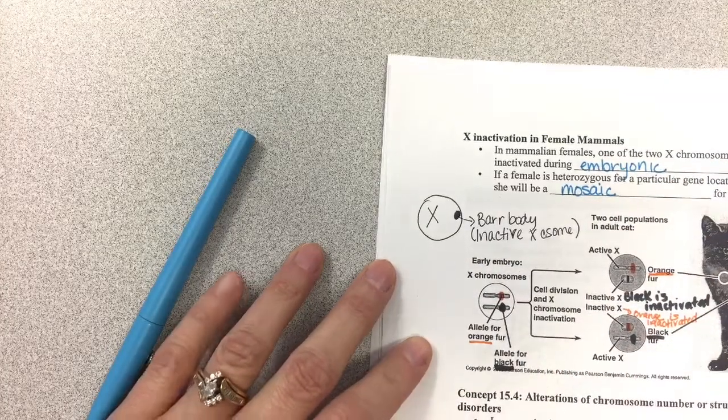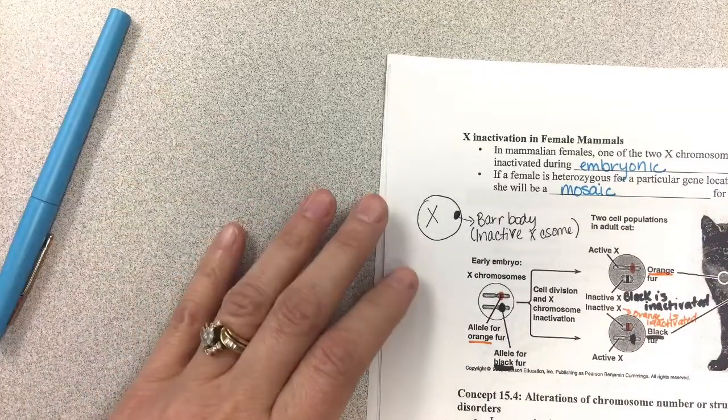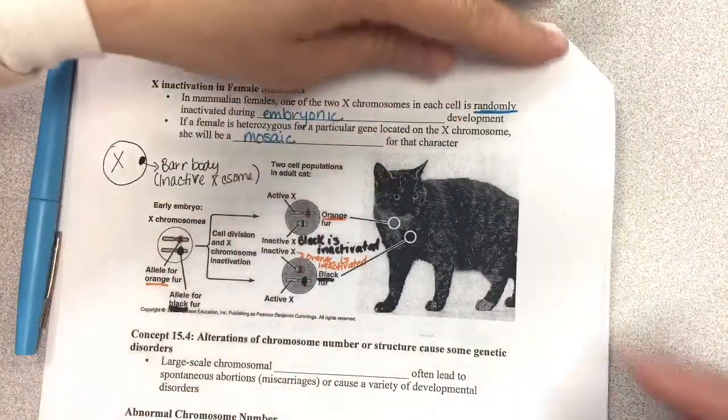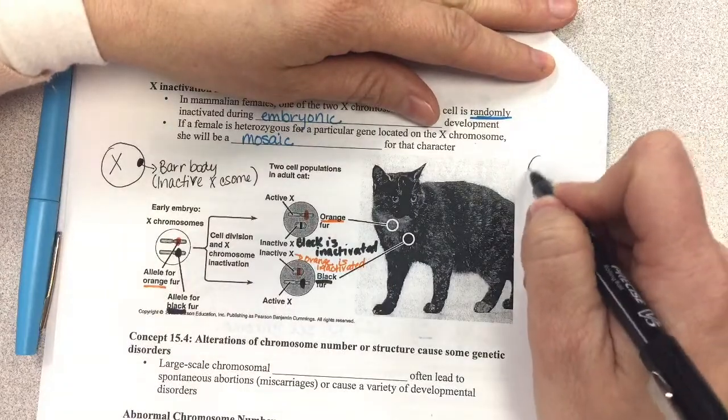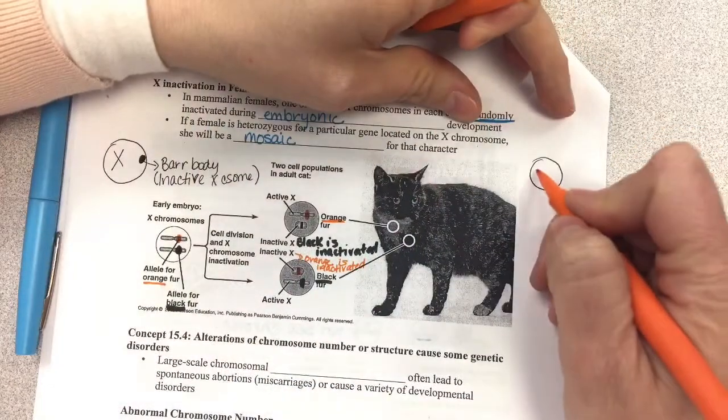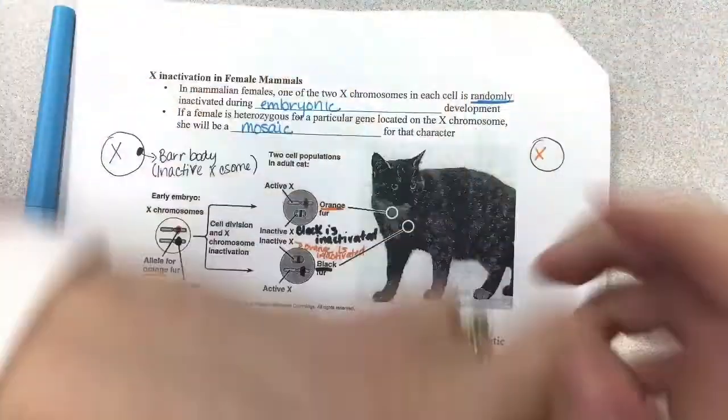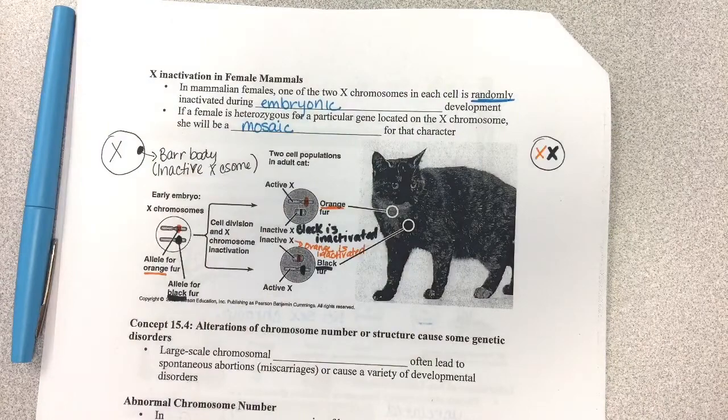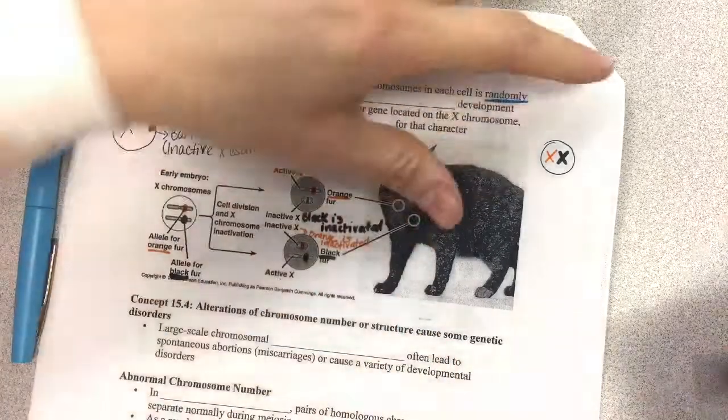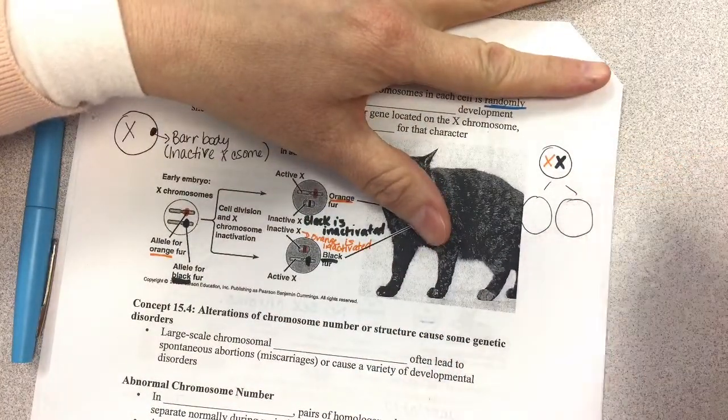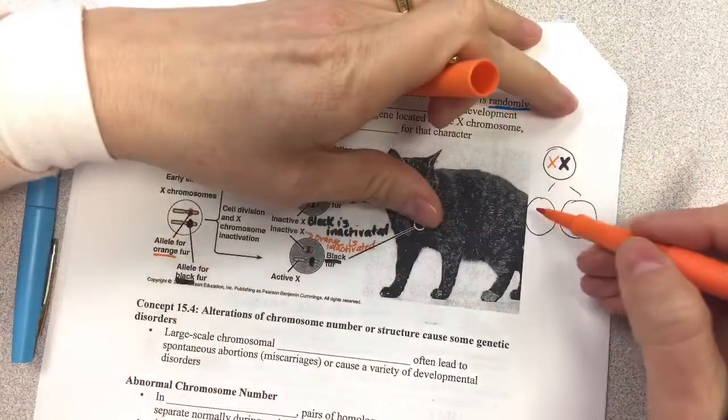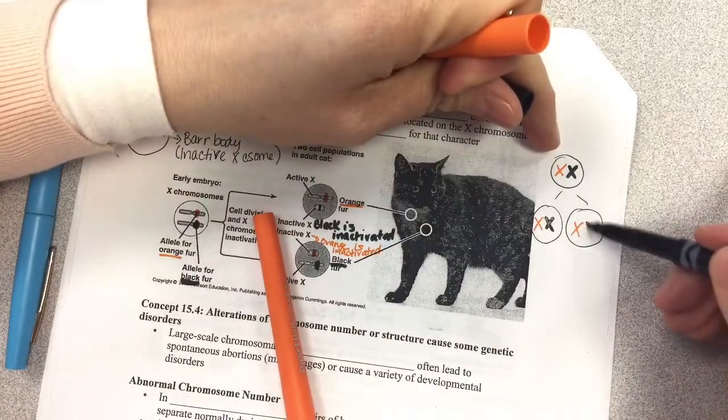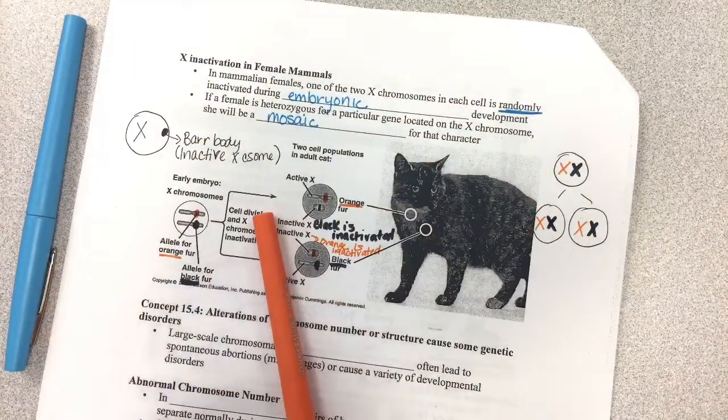So that's what you get. So imagine this. So let's go over here. So here's your cell, and you have an orange X chromosome and a black X chromosome. And so then what happens is, that cell divides. So now you have an orange X and a black X. And then it keeps dividing, and then early on in that development,